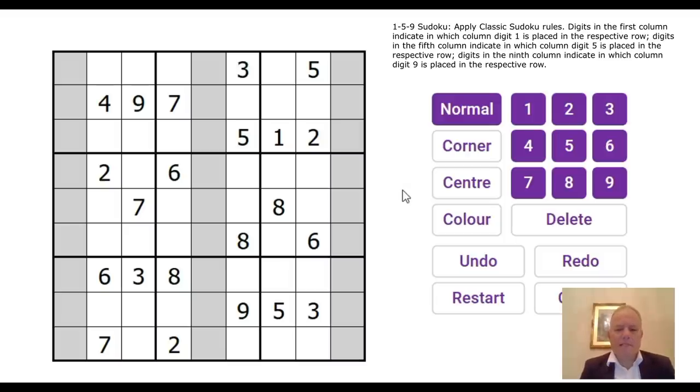I'm going to have a go at this puzzle now. Remember the rule is that digits in the first column tell you the column in which the 1 is placed in that row, and the same for fives and nines. Let's start looking at fives, ones, and nines - they're clearly very important. We've got fives in row one and three so the five in the first box must be there, and that means that the digit 1 is in the fifth column. Nine is in the third column so its marker in the ninth column is three.